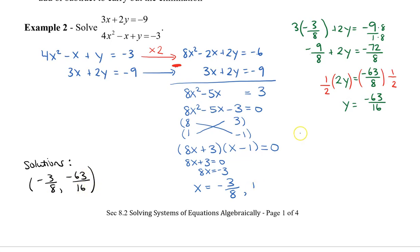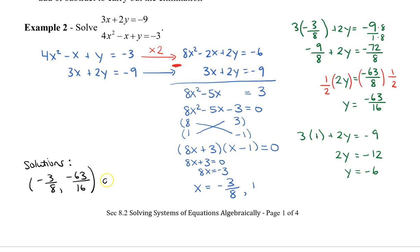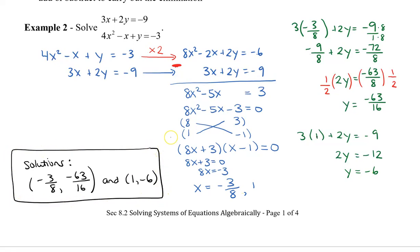Plugging in x equals 1: 3 times 1 plus 2y equals negative 9, so 2y equals negative 12, and dividing by 2, y equals negative 6. So my other solution is (1, negative 6). Make sure that you match the x and y values up correctly — I suggest writing the solutions down as you solve them so you don't get them mixed up.